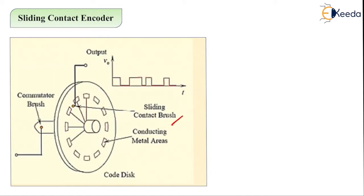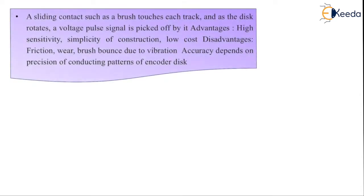The sliding contact such as a brush touches each track as the disk rotates. When the disk is rotating, it touches each track and a voltage pulse signal is picked off by it. This is how the voltage pulse signal is generated. When a sliding contact such as a brush touches a track and as the disk rotates, a voltage pulse signal is generated.